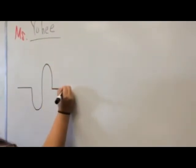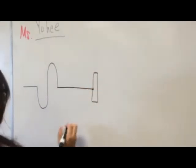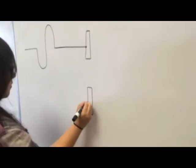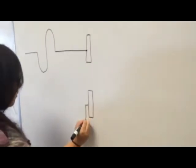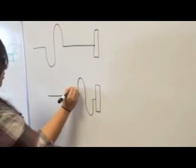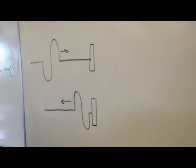We started off by making a wave on the slinky, going into a fixed point. Once the wave hit the fixed point, we noticed that the wave didn't change its shape, only its direction.